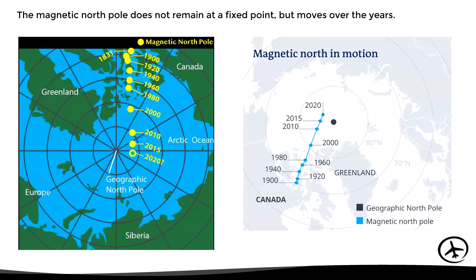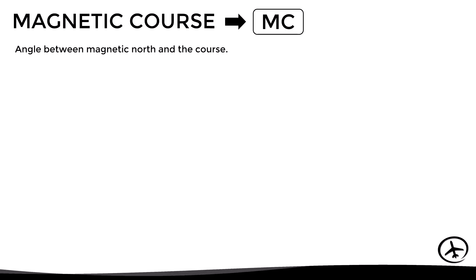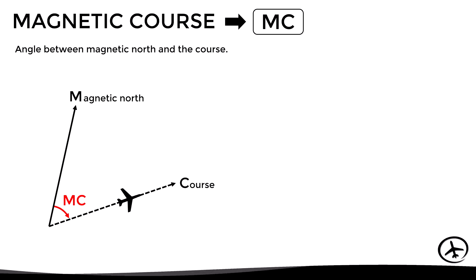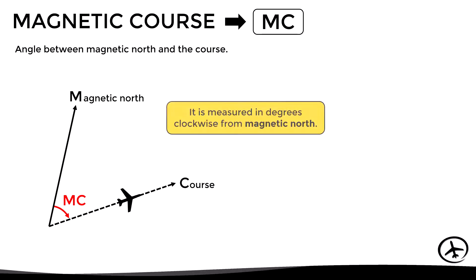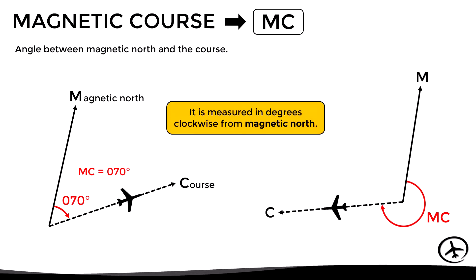If we measure the course with respect to magnetic north instead of true north, we obtain the magnetic course, abbreviated as MC. It is defined as the angle between magnetic north and the course, measured in degrees clockwise from magnetic north — the same as with the true course, except we measure it with respect to magnetic north instead of true north.